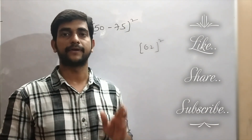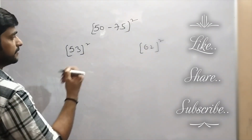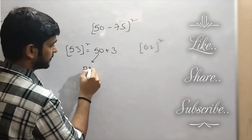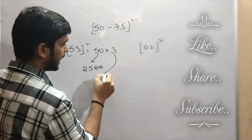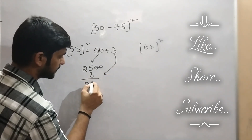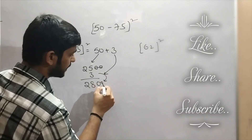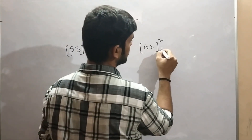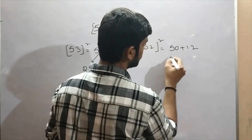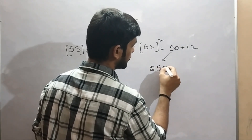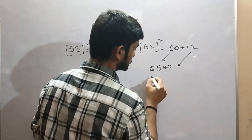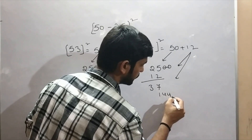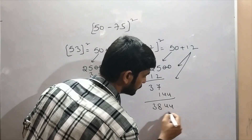Now we are going to find out squares in the range from 50 to 75. 53 we can write it as 50 plus 3. 50 squared is 2500 — neglect the last 2 digits and add 3 to 25, so here I am getting 28. And 3 squared will be 09. So 2809 is the answer for 53 squared. Now let's come to 62 squared. 62 we can write it as 50 plus 12. Taking 2500, neglect the last 2, and adding 12 gives 37. And 12 squared will be 144. So the answer will be 3844.